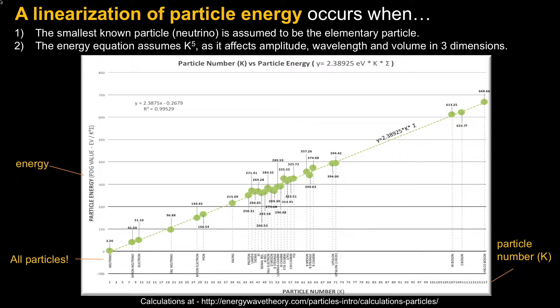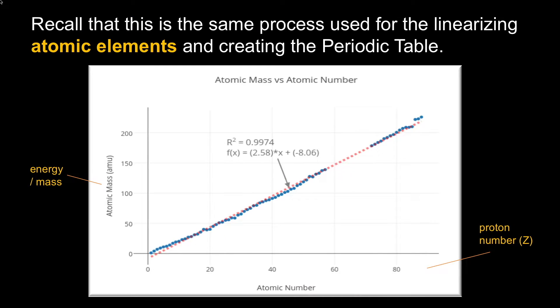Interestingly, if you plot out the particle energies, you get a linear line. The bottom axis is particle count number going from one to 117. One is the neutrino and 117 is the Higgs boson. Everything in between falls neatly onto a line.